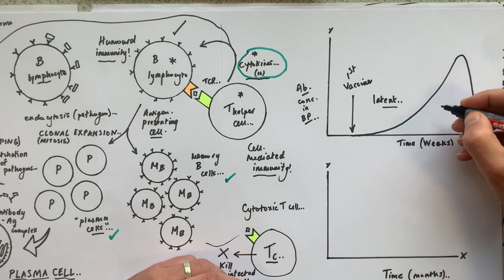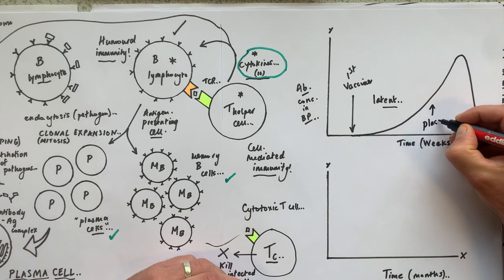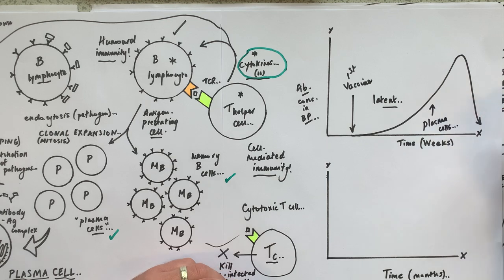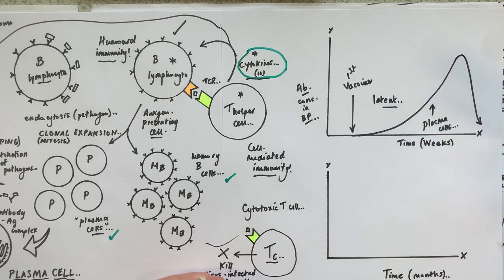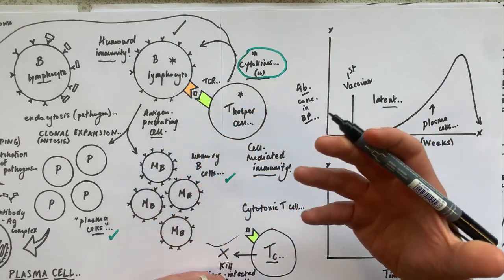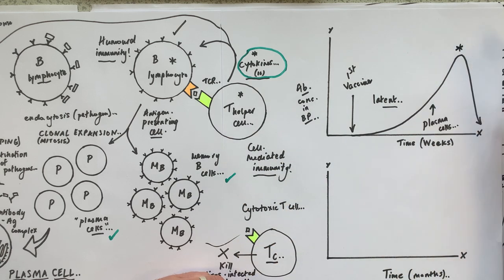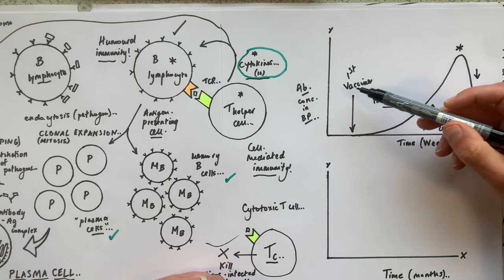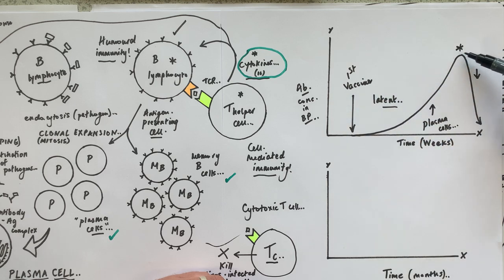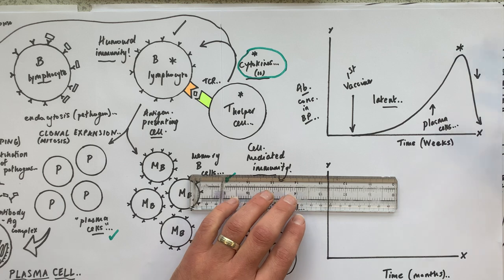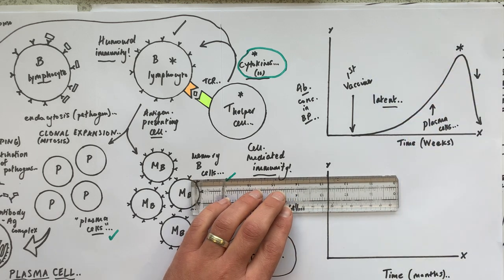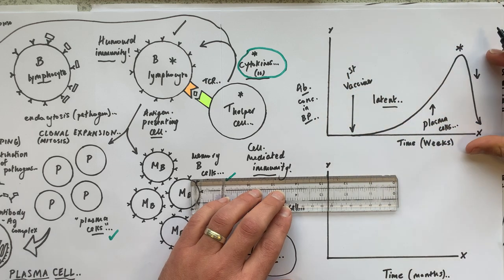Antibody concentration peaks as the number of plasma cells increases, because clonal expansion takes time — cells replicating through mitosis, one cell becoming thousands of genetically identical daughter cells over several weeks. After the peak, once the infection has been removed from the body, the antibody concentration decreases. Importantly, during this process memory B cells are also being made.